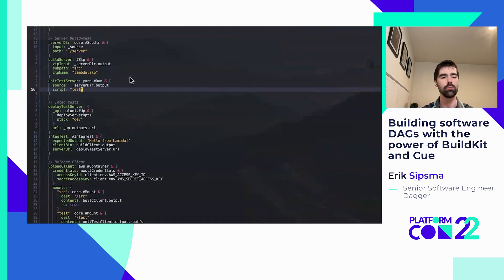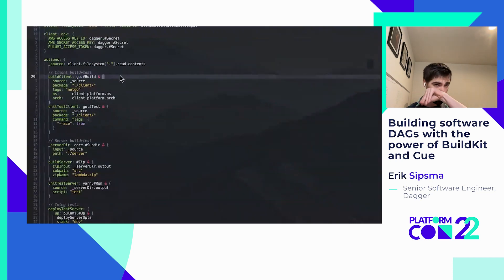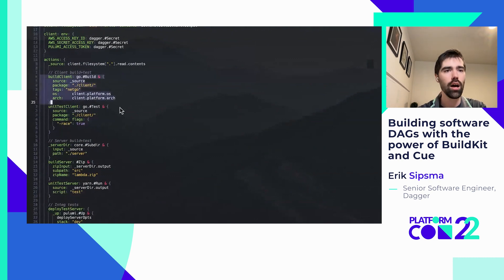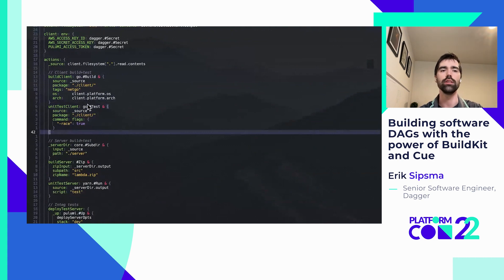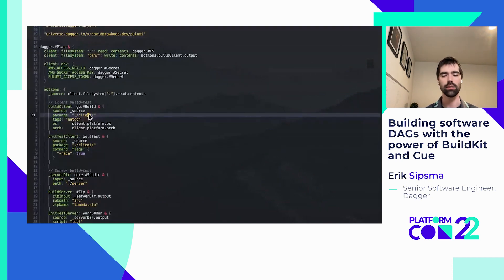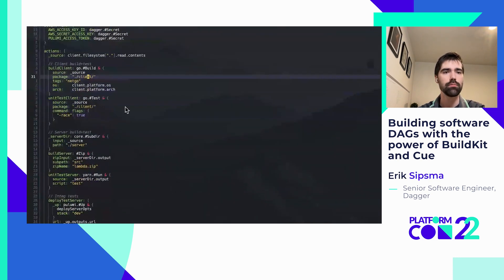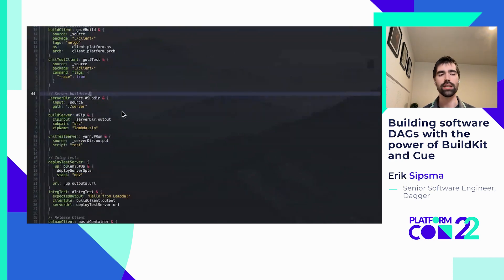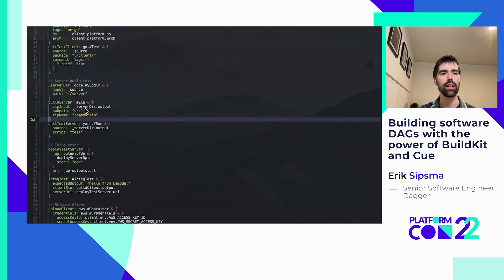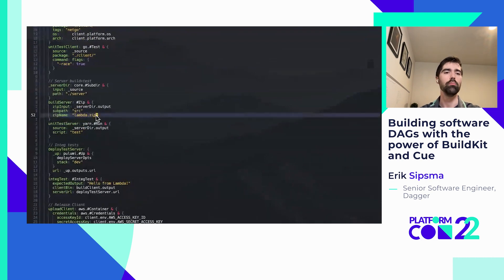This demo covers the CI/CD example with the client and server. The client is a Go binary. Here I'm using CUE to define some build and test steps for it — I just imported an abstraction. All I need to do is say: here's the source code, here's the package I want to compile, it'll go and do that, and its output will be the compiled binary. The binary does HTTP GET requests to a server and prints the output. The server is going to be uploaded to AWS Lambda, which accepts a zip file as input. I made a little zip abstraction that takes my input source code and lets me specify the path I want in the zip and the output filename.